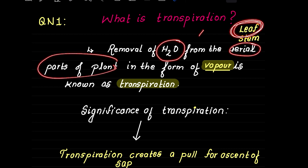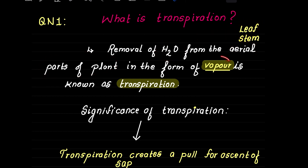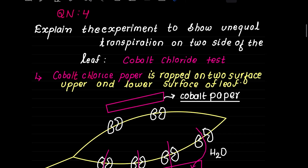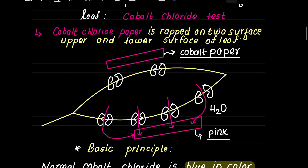Transpiration is the removal of water in the form of vapor from the leaf. The leaf is the main site. There is an experiment to show transpiration on two sides of the leaf — this demonstrates the basic principle of transpiration.